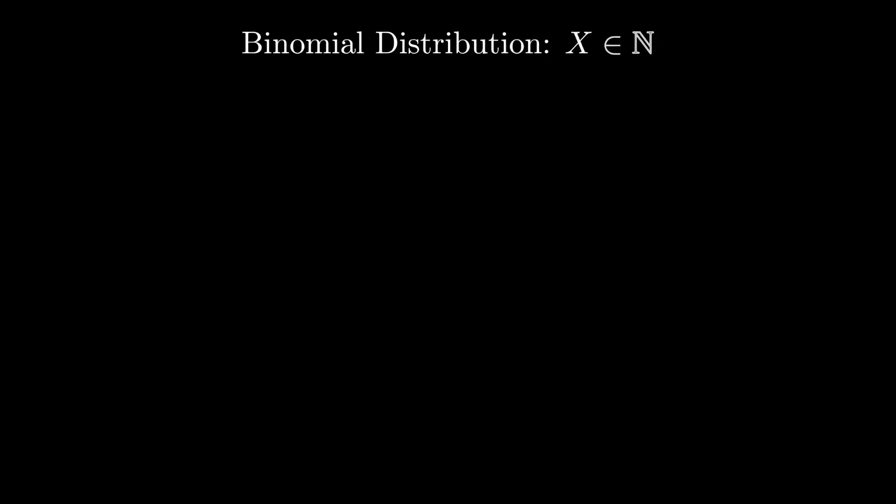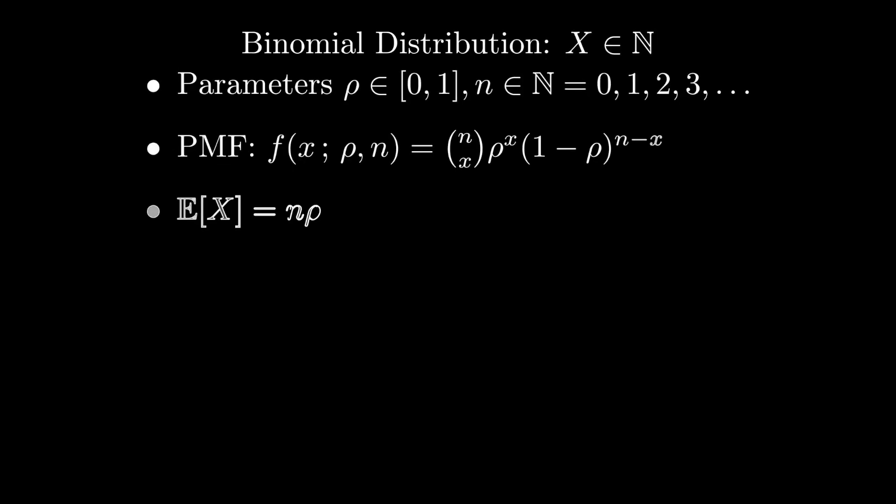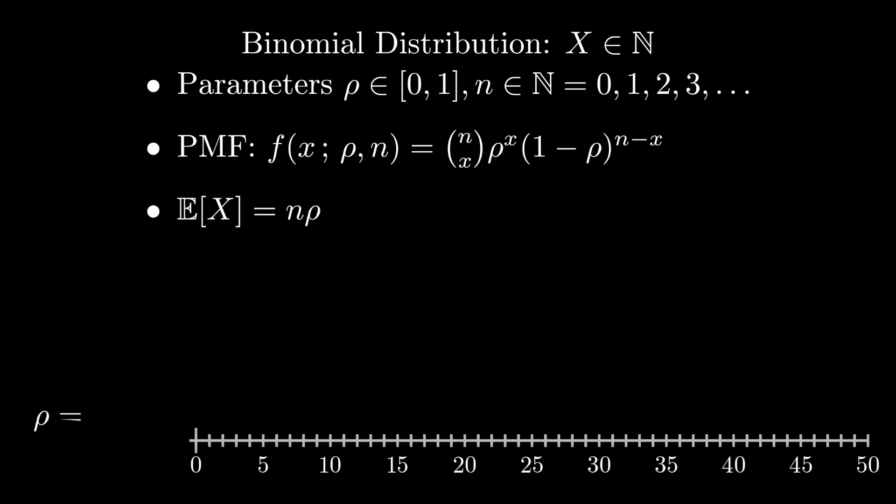Imagine that you had n Bernoulli random variables, each with a probability rho. Their sum has its own name, called the binomial distribution. So the binomial distribution has two parameters, rho and n, and it can take values between 0 and n inclusive. It's a common way to think about binary counts when you don't care about the order that the counts arrived in.